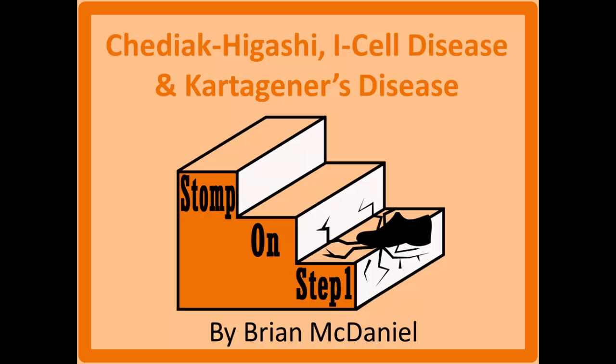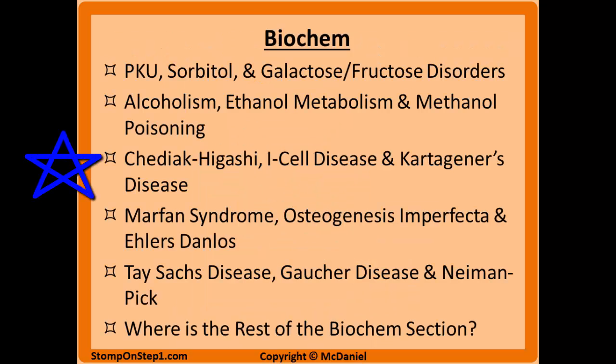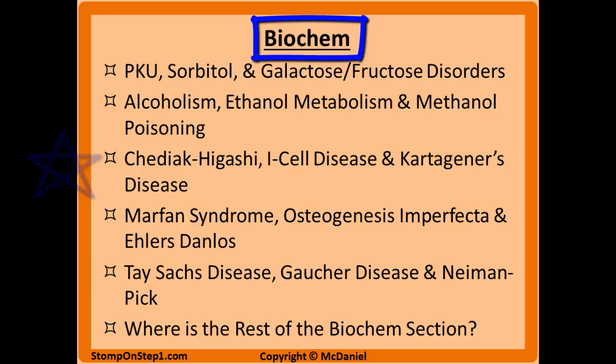Distinguished future physicians, welcome to Stomp on Step 1, the only free video series that helps you study more efficiently by focusing on the highest yield material. In this video I'm going to be covering cytoskeleton abnormalities such as Chediak-Higashi, I-cell disease, and Kartagener's disease. This is the third video in my biochem series of six videos, so I encourage you to check out the rest of these after you watch this video.